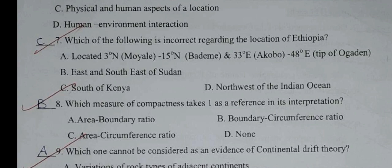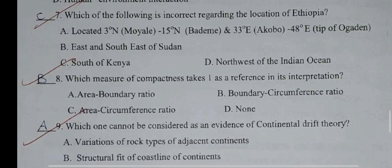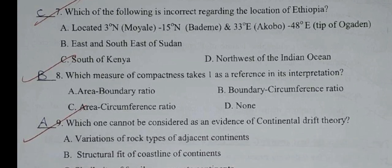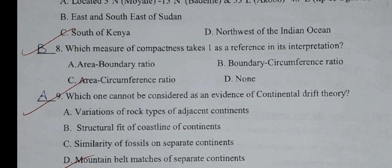Question number seven: Which of the following is incorrect regarding the location of Ethiopia? A: Located 3 degrees north latitude up to 15 degrees north latitude and 33 degrees east longitude up to 48 degrees east longitude. B: Eastern and south-east of Sudan. C: South of Kenya and north-west of India.